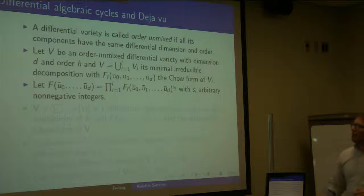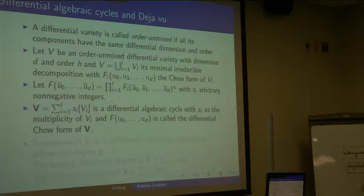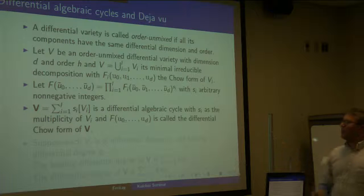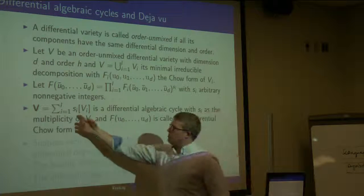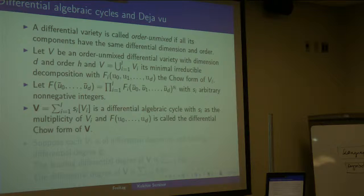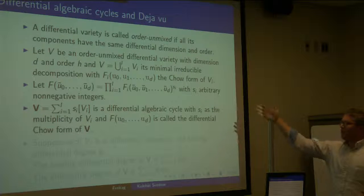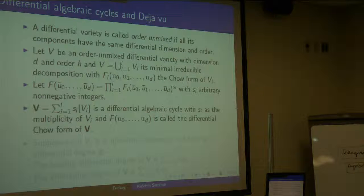A differential algebraic cycle is a formal sum of equidimensional differential subvarieties, where the s_i's are the multiplicities. The differential Chow form is defined as the product with powers in the same way as for the algebraic Chow form. There is in fact a paper by Weley and a student of hers giving an algorithm to perform this computation from the characteristic set.